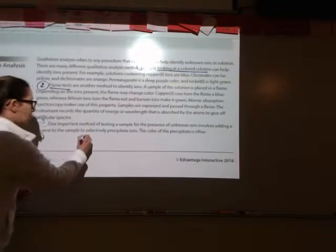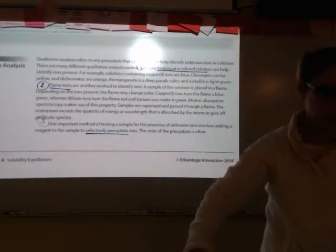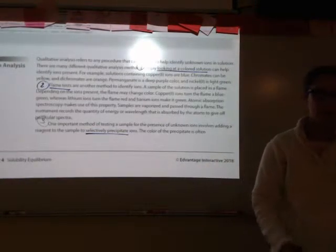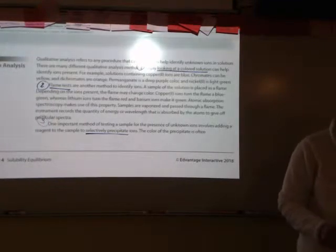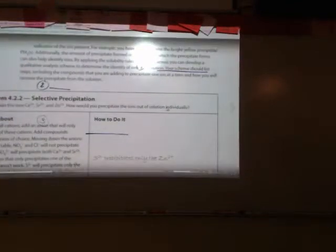The last method that tends to be relatively important in chemistry for identifying unknown ions is selective precipitation. So selective precipitation is where you're going to be adding specific substances to a solution that has ions in it and you will specifically precipitate out an ion and then you'll filter it and then you'll keep performing that process until you have gotten all of the ions out of the solution.